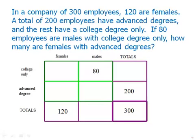So now, as we said above, if there are 120 females, there have to be 180 males, so that they add up to 300. Similarly, if there are 200 with advanced degrees, there must be 100 with college degree only, so they add up to 300.